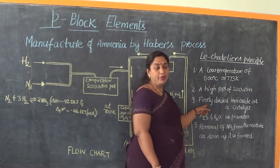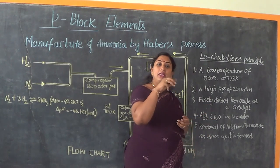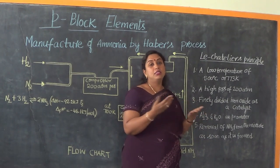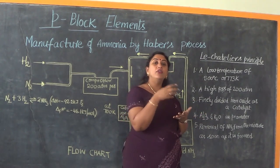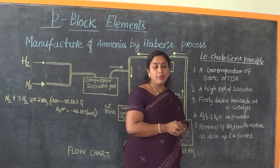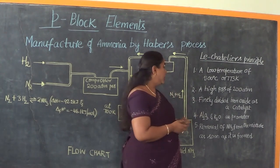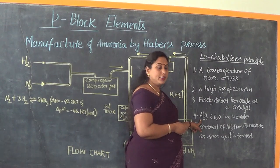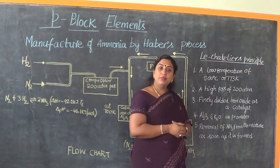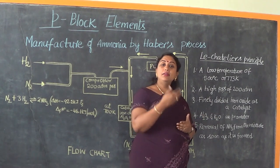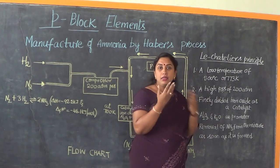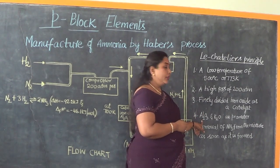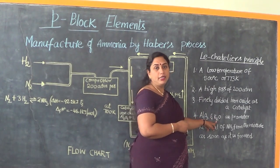An important point: whenever a catalyst is taken in finely divided or powdered form, it creates more surface area for attachment of reacting particles, as we increase the active centers in that state. We also use alumina (Al2O3) and potassium oxide (K2O) as promoters — chemical substances that enhance and accelerate the activity of the catalyst.